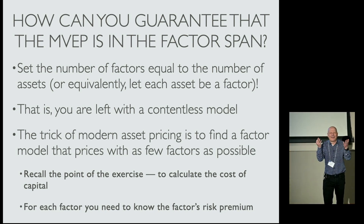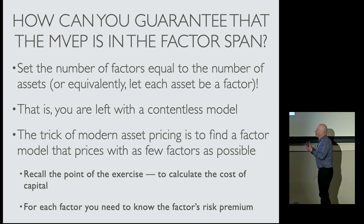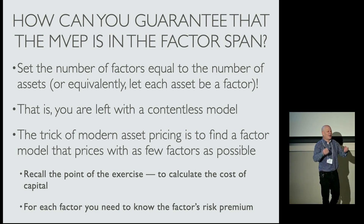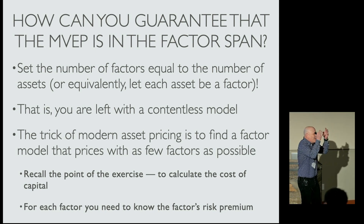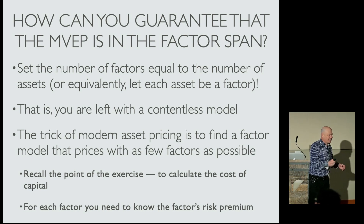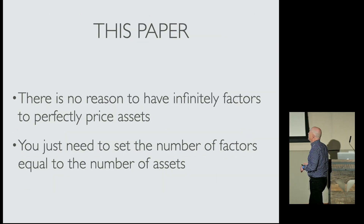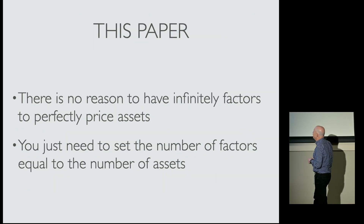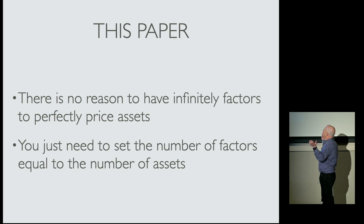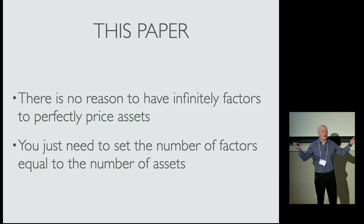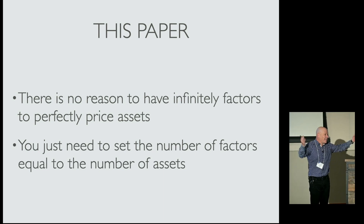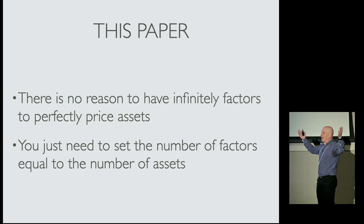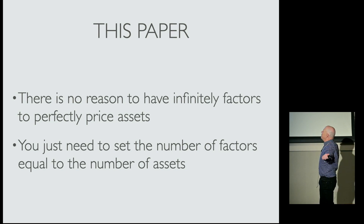So the trick of asset pricing is not to have a lot of factors. In order to figure out the cost of capital, we need a small number of factors so we can know what the risk premium of each factor is. Now this paper — I do not, for the life of me, understand why you need infinitely many factors. If you want to get the SDF, you need the number of factors equal to the number of assets. I do not understand why you need any more. Maybe somebody can explain that to me.